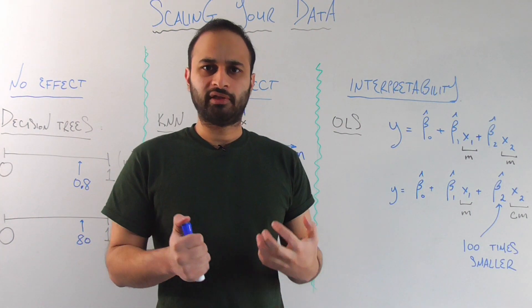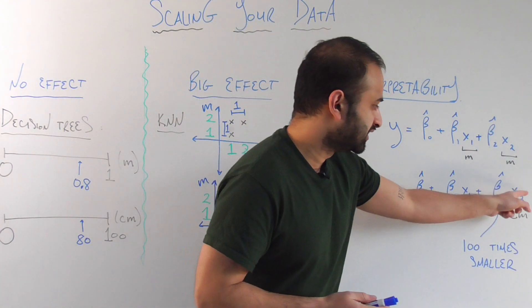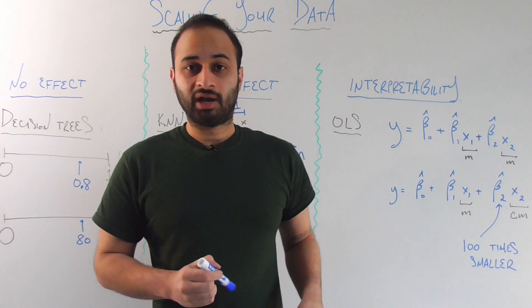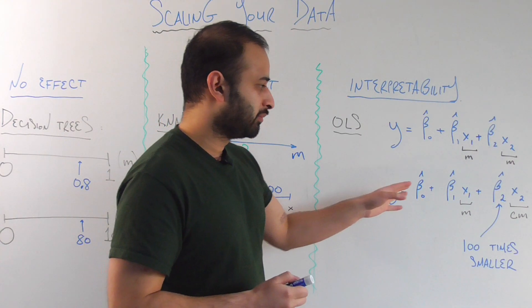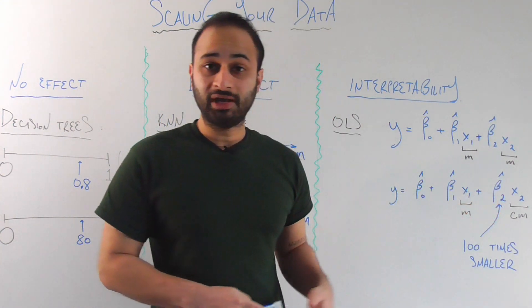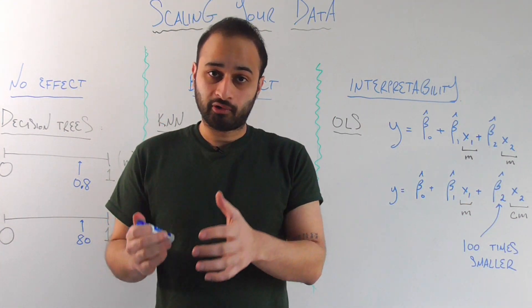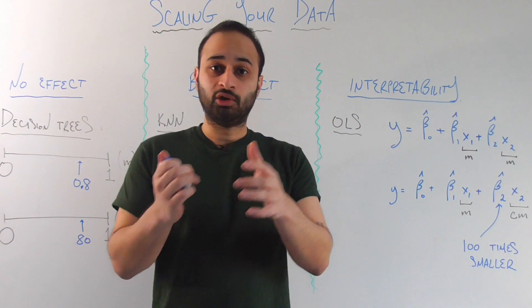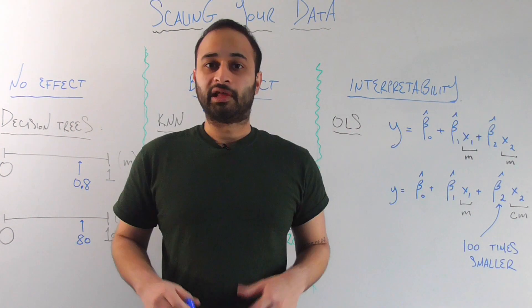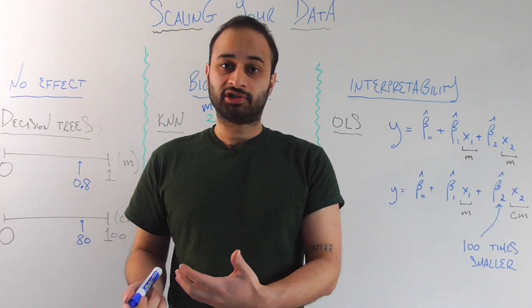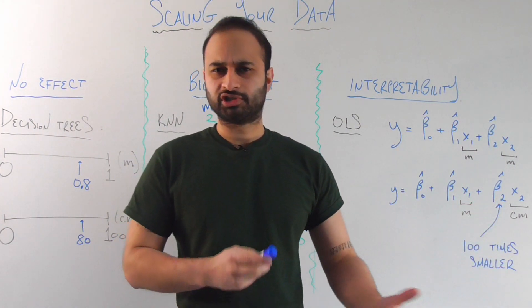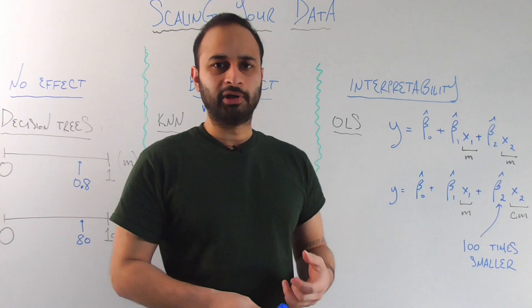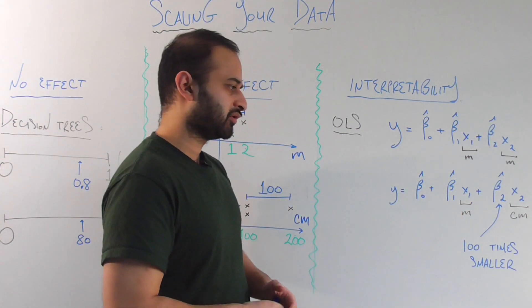If that's still not clear, then think about it this way. If I increase this guy by one hundred, then I'm going to increase the response variable by one hundred times the new beta2. But that one hundred times the new beta2 needs to be equal to the old beta2. That logically means that the new beta2 is a hundred times smaller than the old one. So this is just playing around with the scaling because we decided to scale one of our variables.